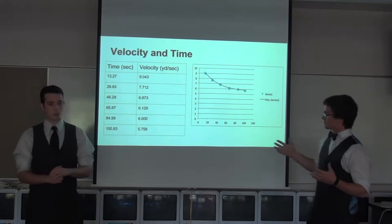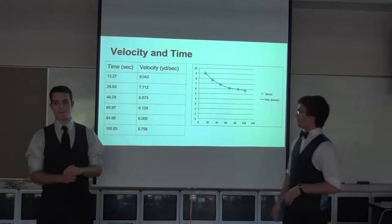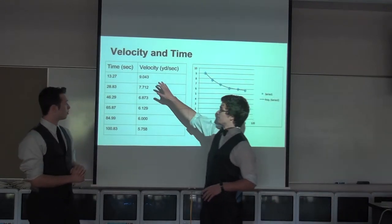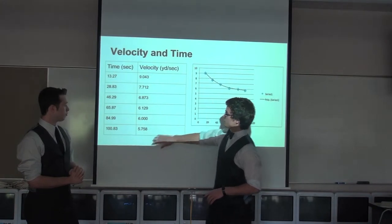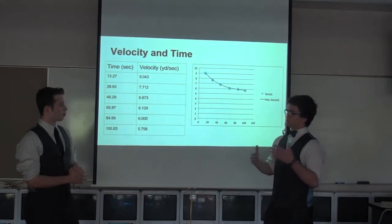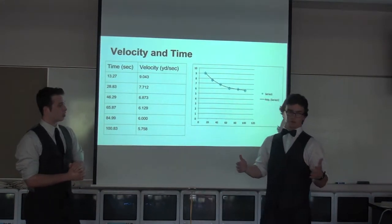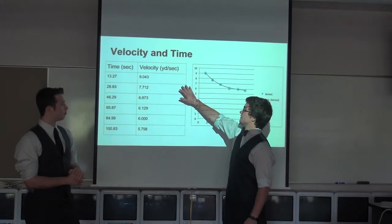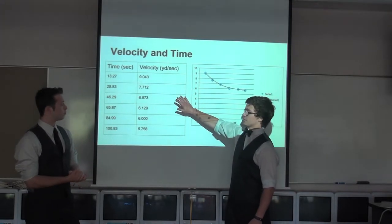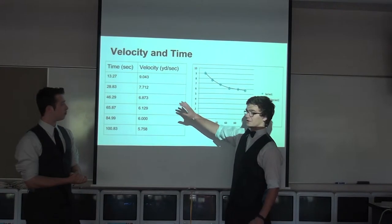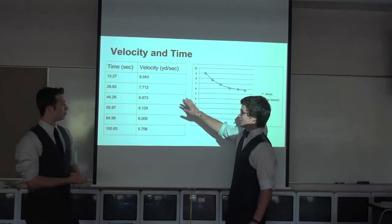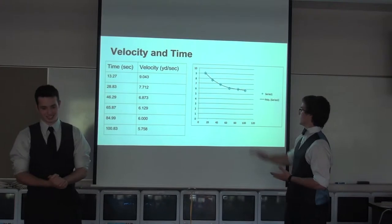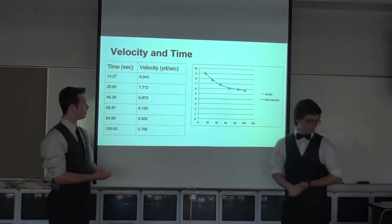So this is our first getting into the math. This is a running interval of times between 125-yard sprints, showing my velocity decreasing in yards per second, and then this is the graph showing that.